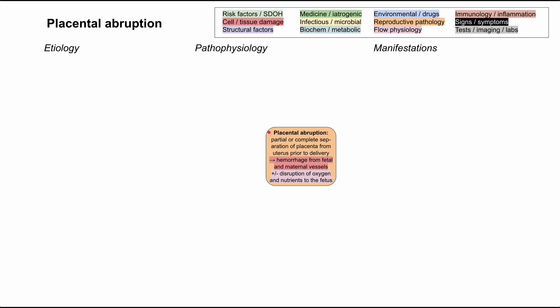Of course, it's normal to have separation of the placenta once the baby is delivered. Sometimes it's called the fourth stage of pregnancy — the delivery of the placenta — but when you have it before delivery, that's abnormal and it's quite dangerous. It can cause a lot of bleeding and a lot of distress for the mom and the fetus. That partial or complete separation of the placenta will cause bleeding from the fetal and maternal vessels, and it can cause a disruption of oxygen and nutrients to the fetus.